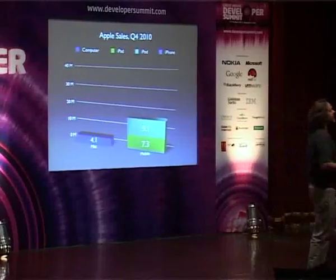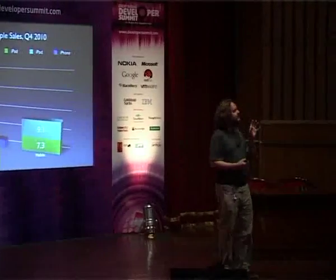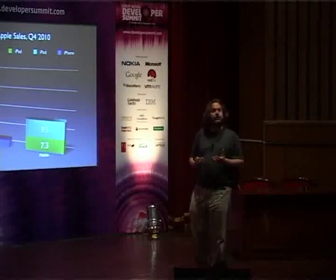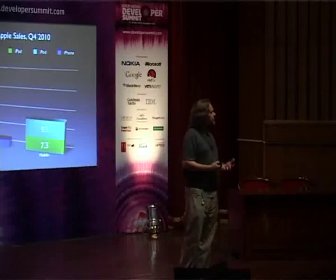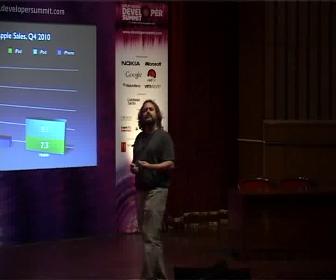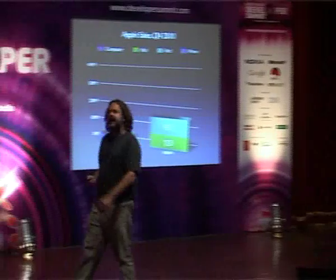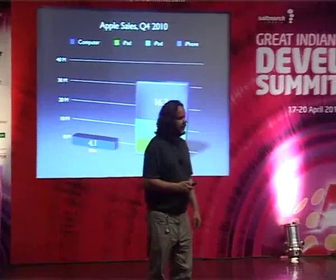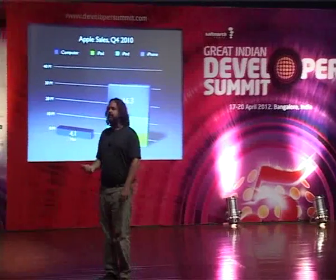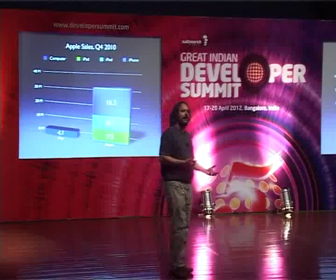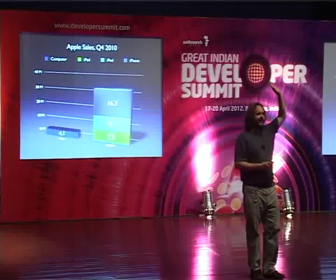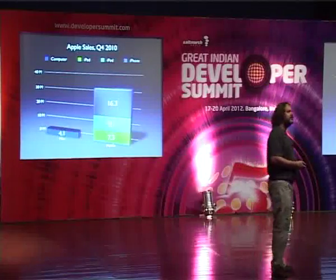They sold more than twice as many iPods in that same period. And if you've ever held an iPod Touch, you know it's got a mobile Safari browser and all the capabilities of an iPhone. You certainly can't make phone calls on it, but for web developers it's just as important. They sold nearly twice as many iPads, more than twice as many iPods, and four times as many iPhones in that same period. They're selling mobile devices versus desktop computers at a ratio of about 8 to 1. How many of you thought Apple was a mobile company? I didn't consider it either — I considered them a desktop computing company.